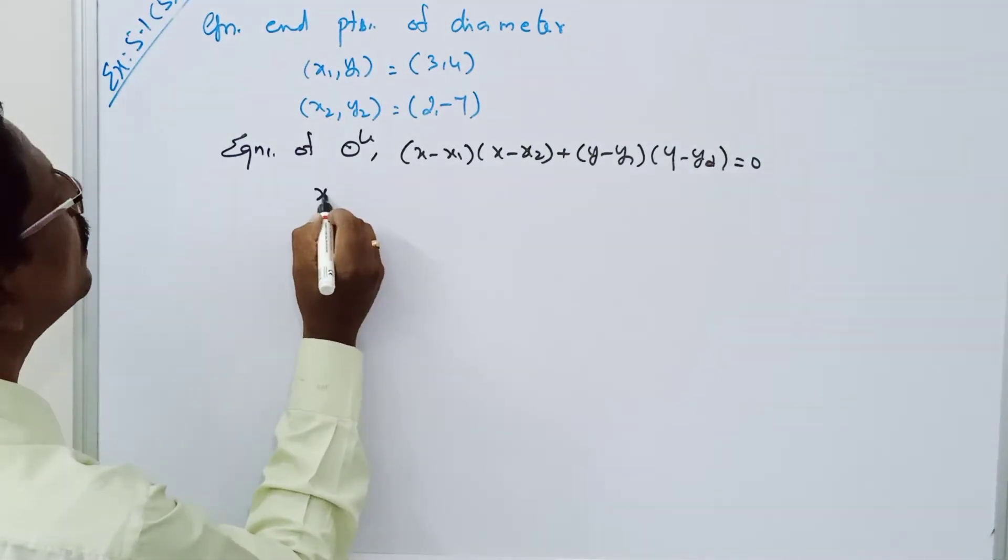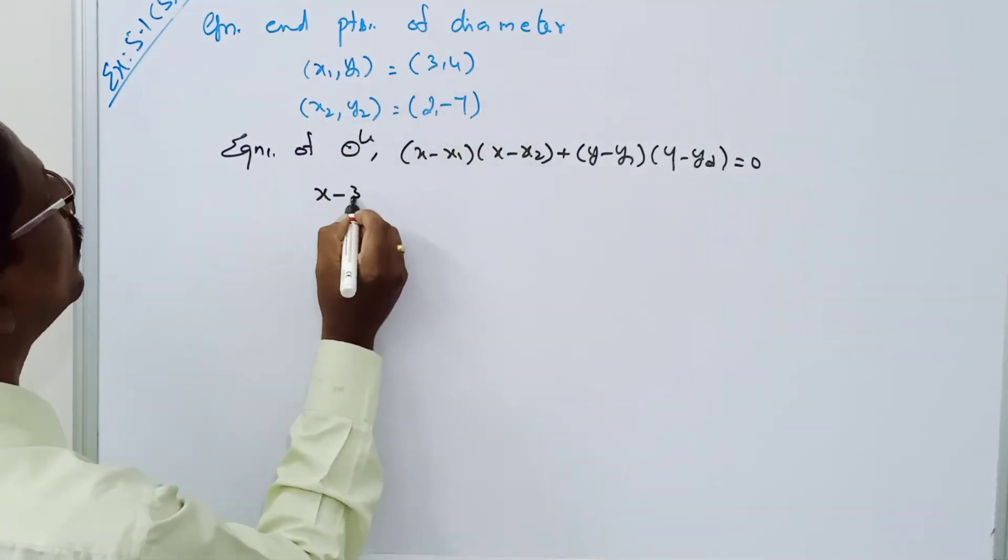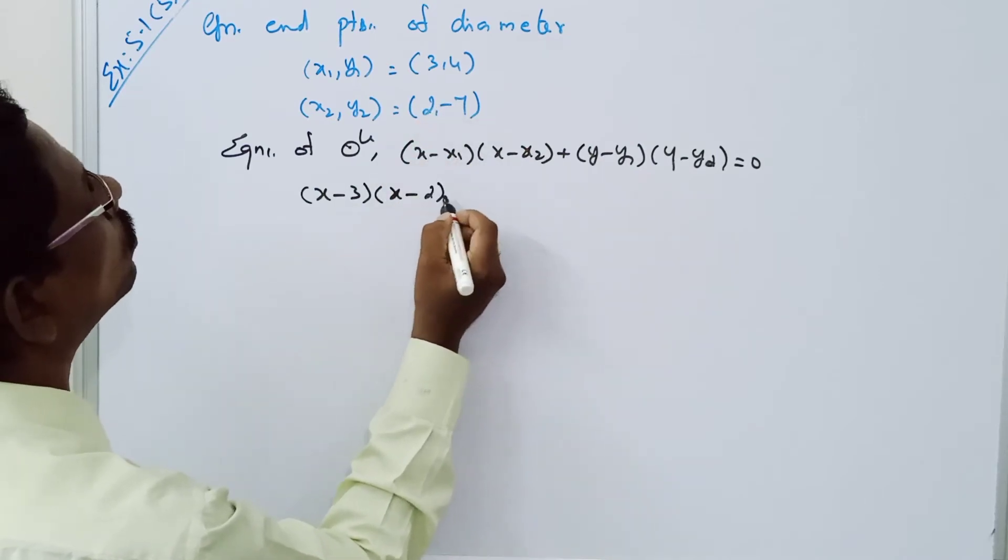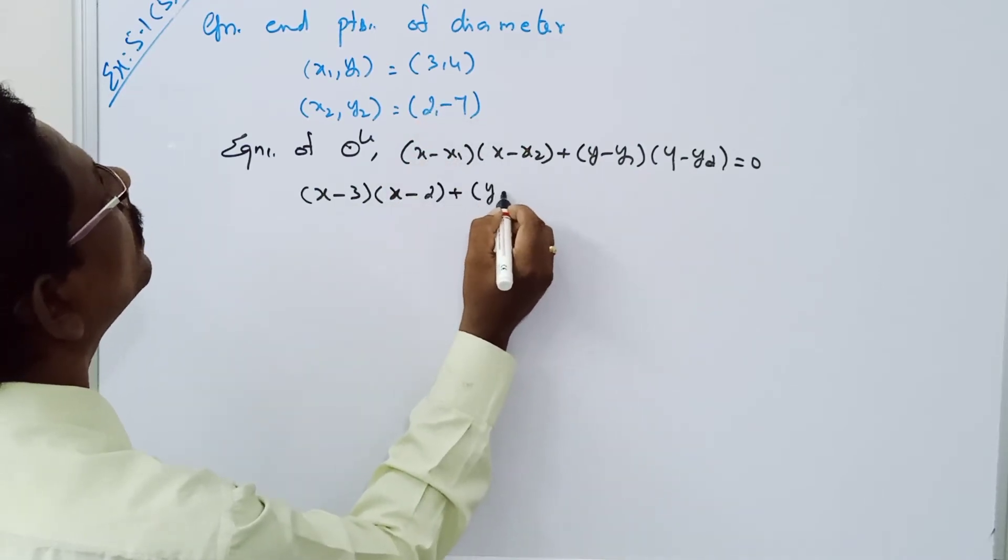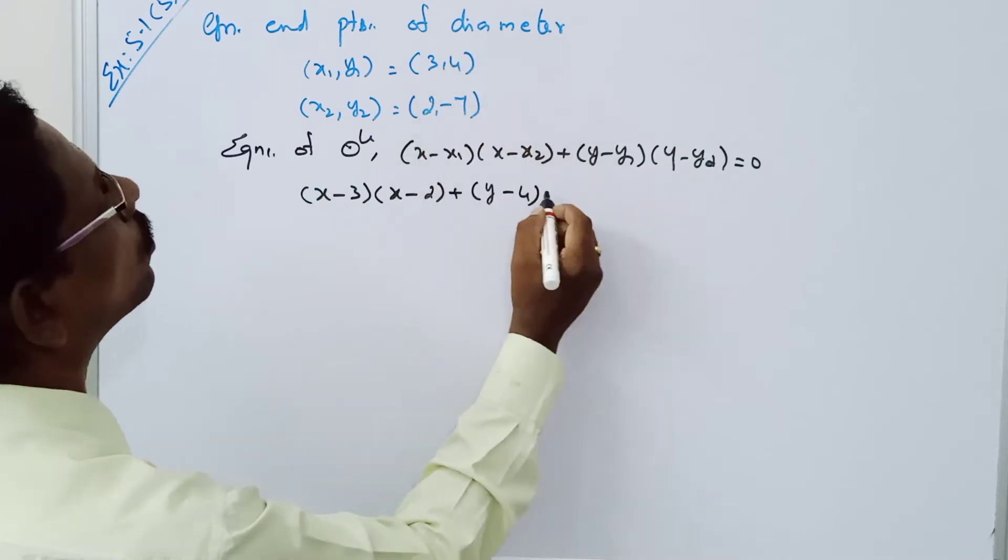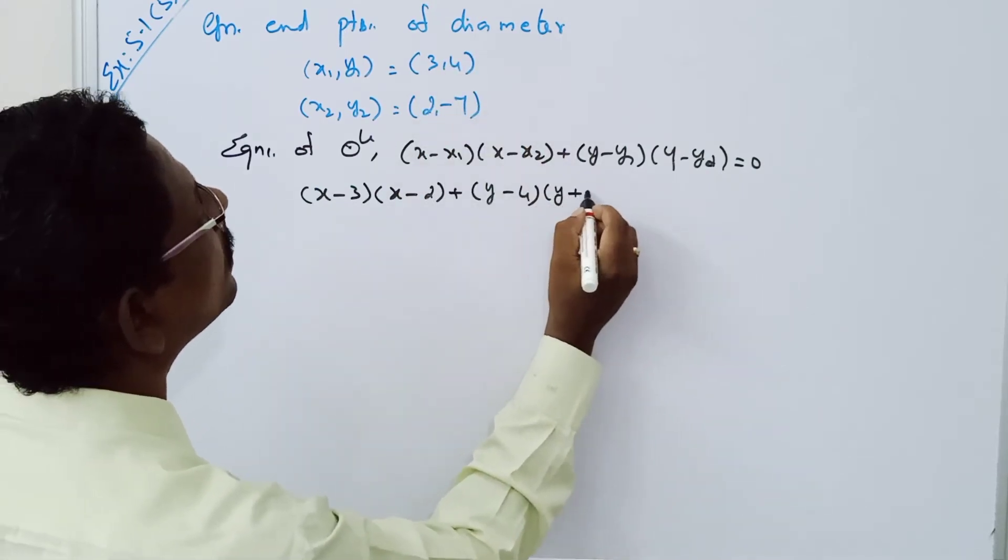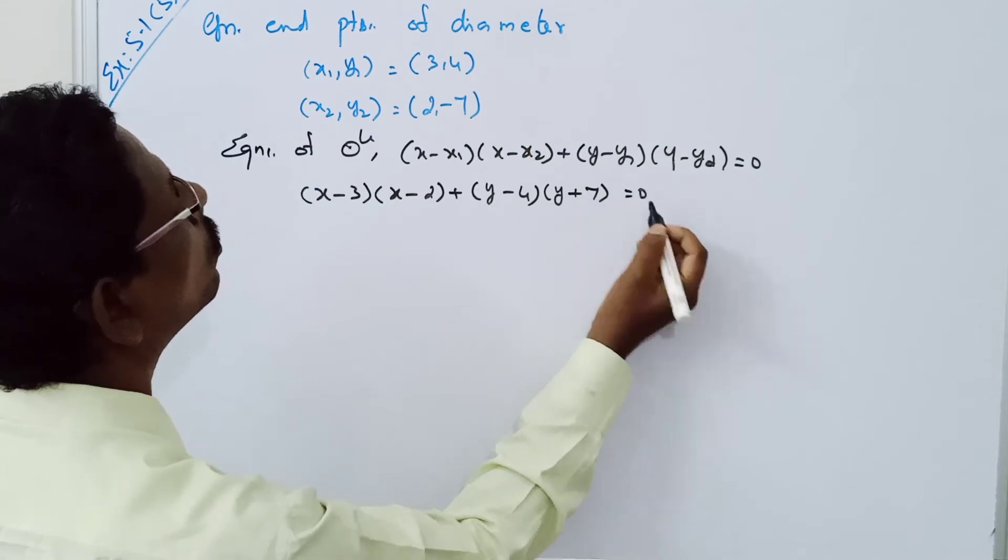So x minus x1, which is 3, into x minus x2, which is 2, plus y minus y1, which is 4, into y minus y2, minus 7, equal to 0.